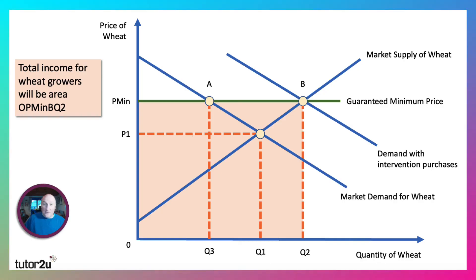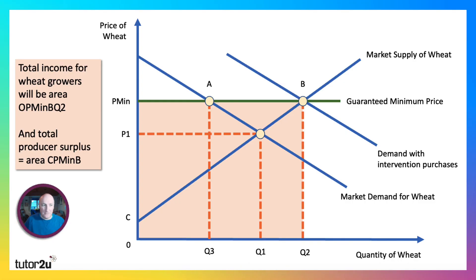The total income for growers would be the area O-P(min)-B-Q2, which represents total revenue. Producer surplus, if you wanted to show it, would be the area C-P(min)-B.